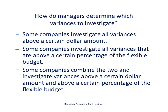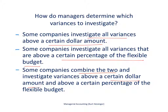Let's talk about how managers determine which variances to investigate. For direct materials, direct labor, and variable manufacturing overhead, there are two variances each. The criteria managers often use include: investigating all variances above a certain dollar amount, investigating variances above a certain percentage of the flexible budget, or combining the two — looking at variances above both a certain dollar amount and a certain percentage. There are definitely other approaches as well.